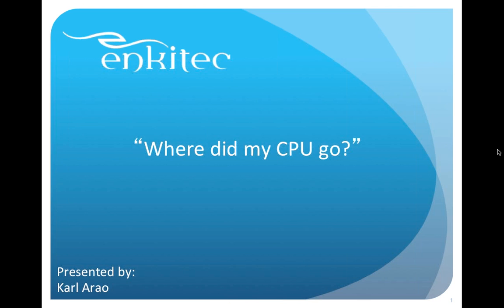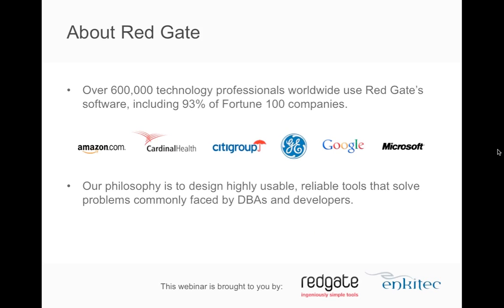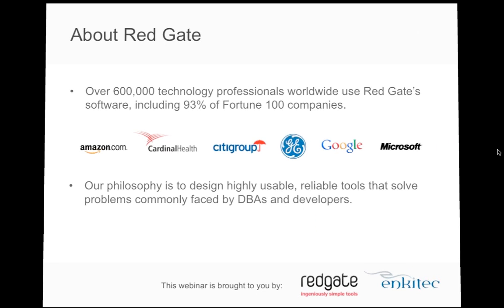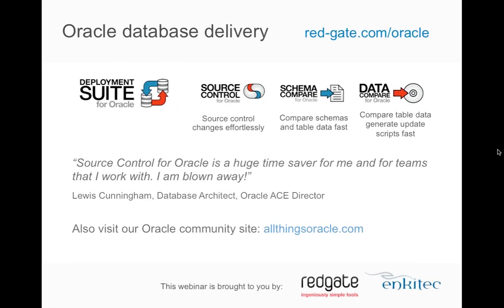Hello everyone. We welcome you today to the 'Where Did My CPU Go?' webinar, presented by Encotech. We certainly appreciate you taking time out of your day to join us. I'd like to introduce our sponsor, Redgate — an organization out of the UK that Encotech has formed a partnership with. They develop tools useful for DBAs and developers, with over 600,000 users worldwide. You can learn more by visiting their website, and they also manage allthingsoracle.com, a resource center for Oracle users.